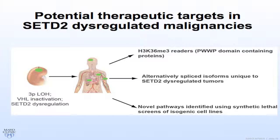Thinking about potential targets in SETD2-dysregulated malignancies: as noted, it's very tough to target a tumor suppressor or loss-of-function mutation. Some targets may include readers of histone 3-lysine 36 trimethylation — three characterized readers contain a PWWP domain, two of which are alternative splicing factors and one is a DNA methyltransferase. Additionally, alternatively spliced isoforms unique to SETD2-dysregulated tumors — including extracellular surface markers and tyrosine kinases — could be targeted. Finally, using synthetic lethal screens in isogenic cell lines to find pathways that selectively kill SETD2-deficient but not parental cell lines.